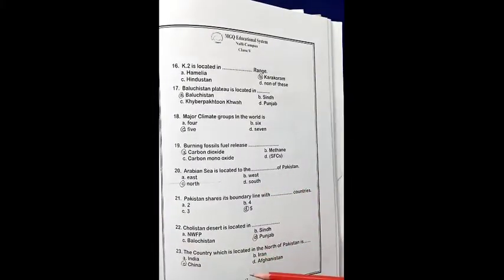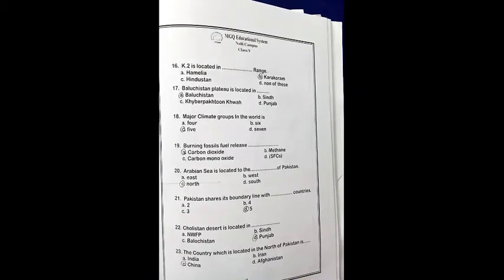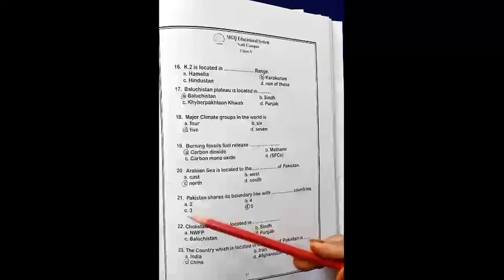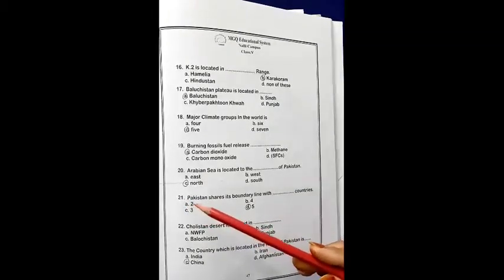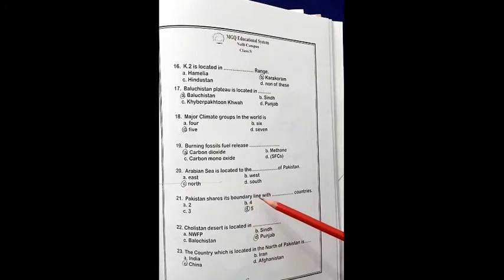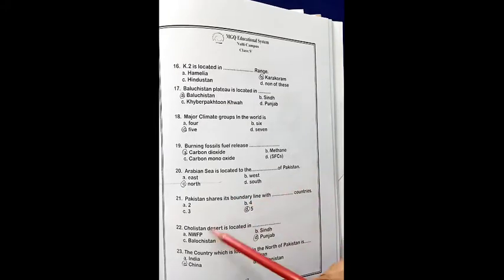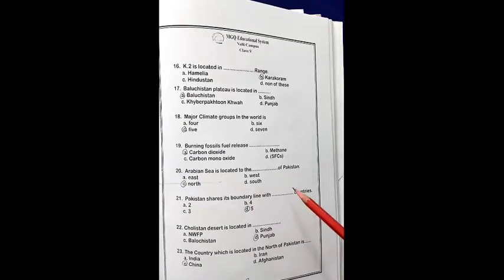As you see, we have page number 47 and we have 20 MCQs before. So today we will do 21 MCQs. Pakistan shares its boundary line with dash countries. A, we have two. B, we have four. C, we have three. D, we have five. So option D, we have perfectly correct. We have five countries.